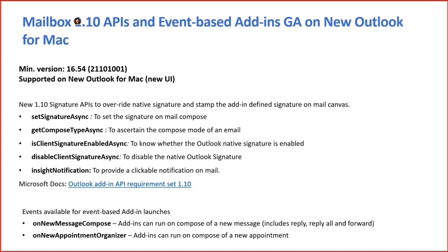For the event-based add-ins, the events available on Outlook for Mac today are On New Message Compose and On New Appointment Organizer — those are the two events available today. We are presently working on the 1.11 APIs, and that should be coming up pretty soon.